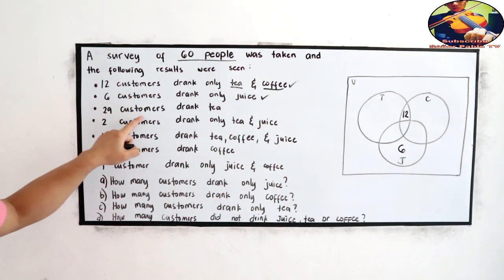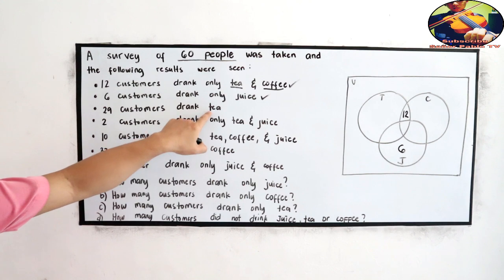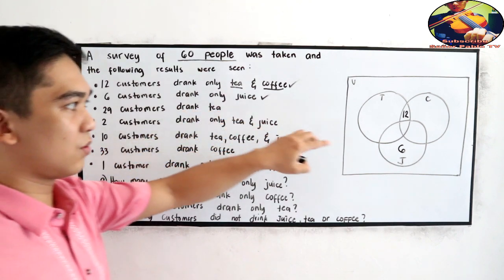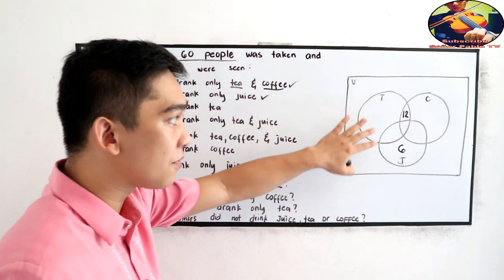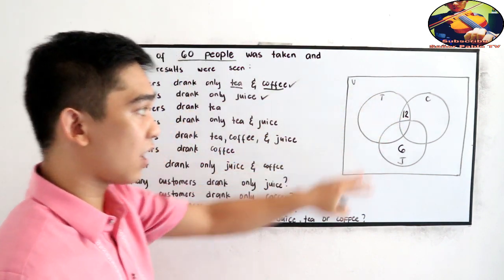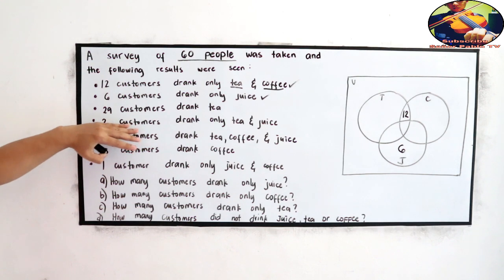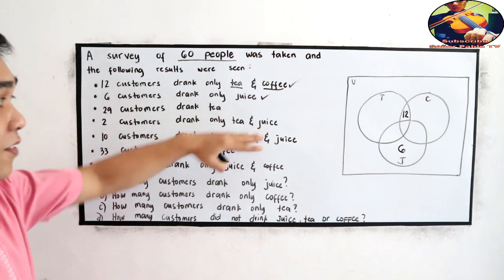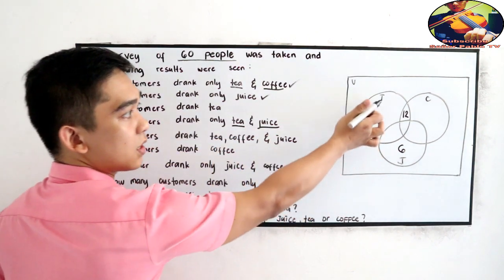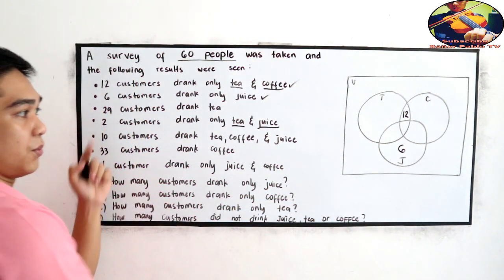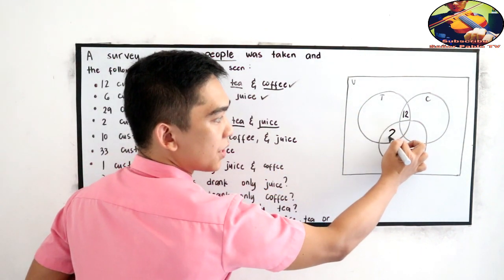29 customers drank tea. So we will go back in this given because we don't have enough given in our Venn diagram. Number 4 given. 2 customers drank only tea and juice. Intersection of tea and juice. Tea and juice, there are 2. So we will write 2 here.